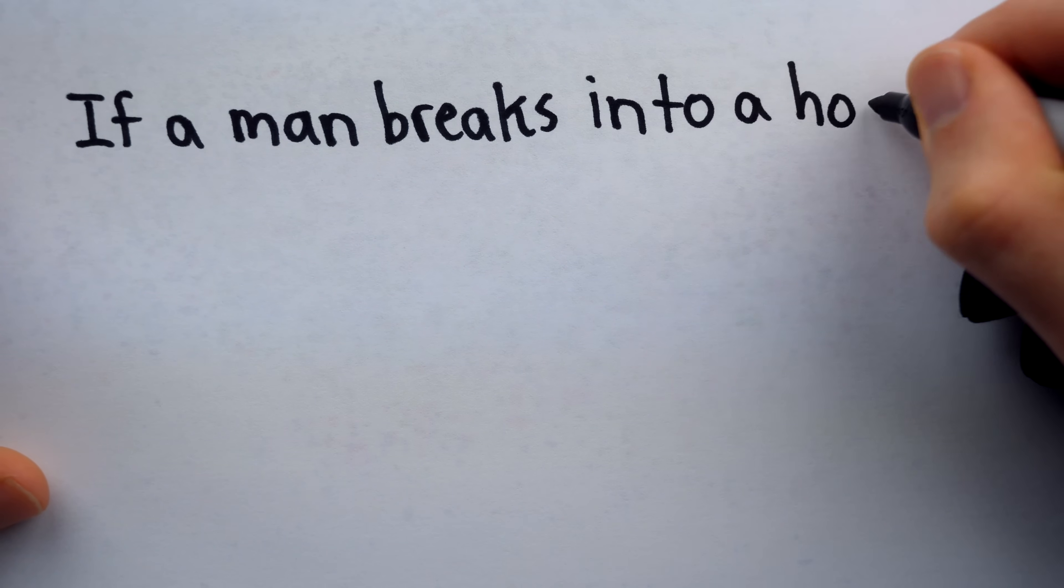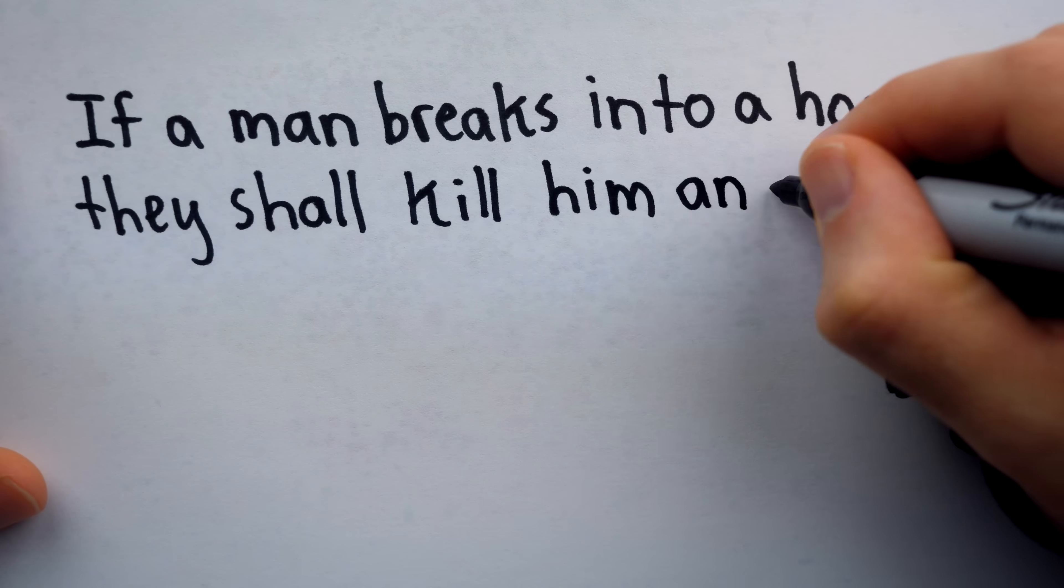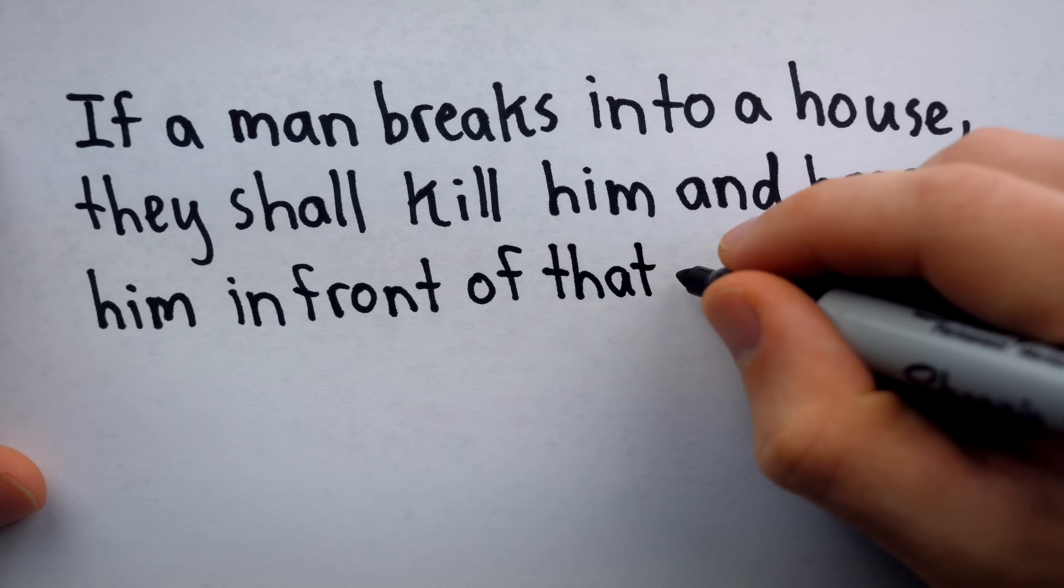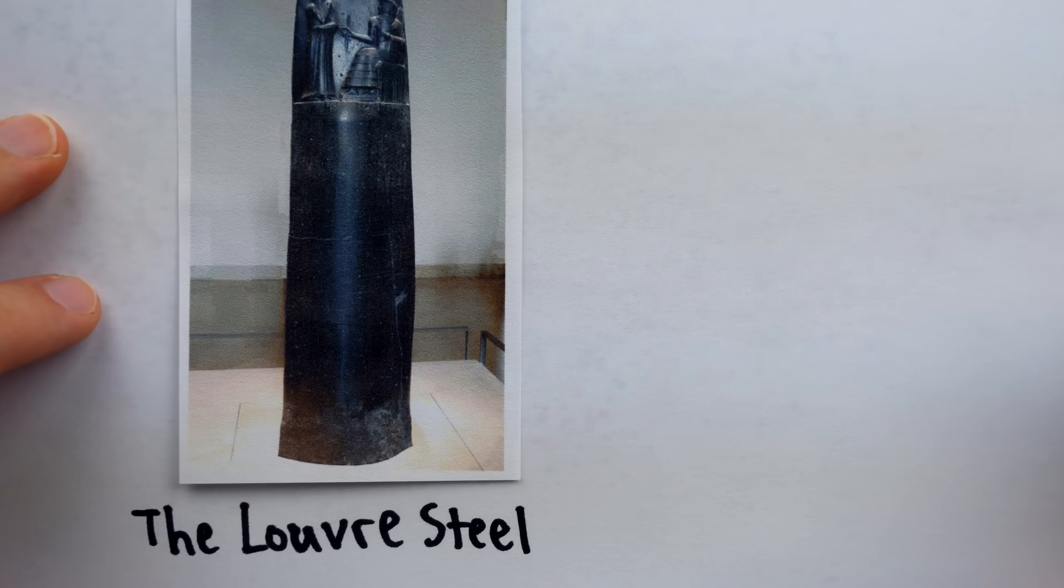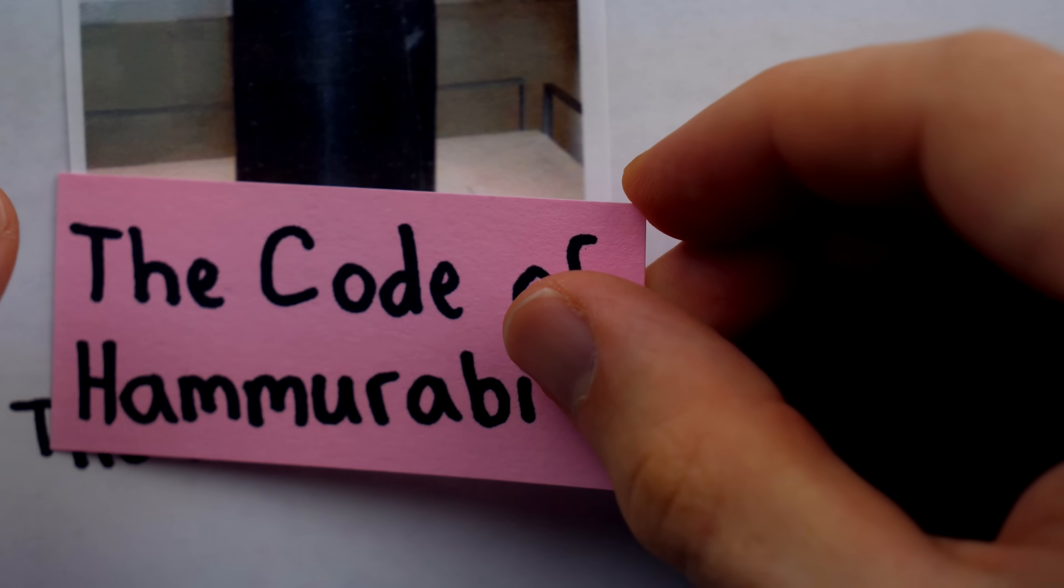If a man breaks into a house, they shall kill him and hang him in front of that very breach. So go two of the provisions described in the Louvre Stele, which is better known as the Code of Hammurabi.